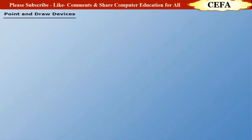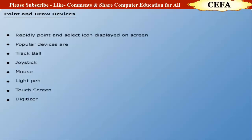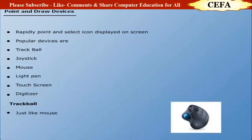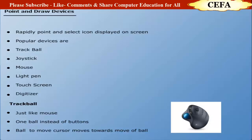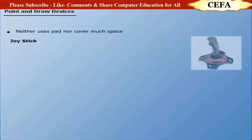Point and draw devices: A point and draw device is an input device which helps to rapidly point and select an icon displayed on the screen. Some popular point and draw input devices are trackball, joystick, mouse, light pen, touch screen, and digitizer. Trackball works just like a mouse but contains only one ball instead of different buttons. Trackball uses this ball to move the cursor position from one location to another and does not need any pad or cover much space.